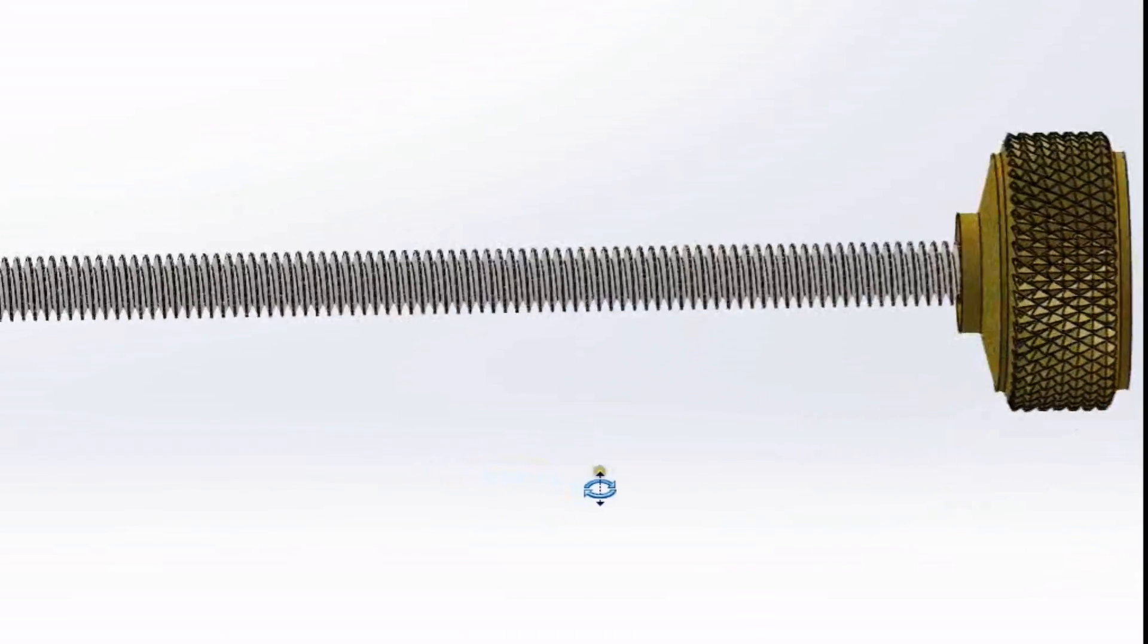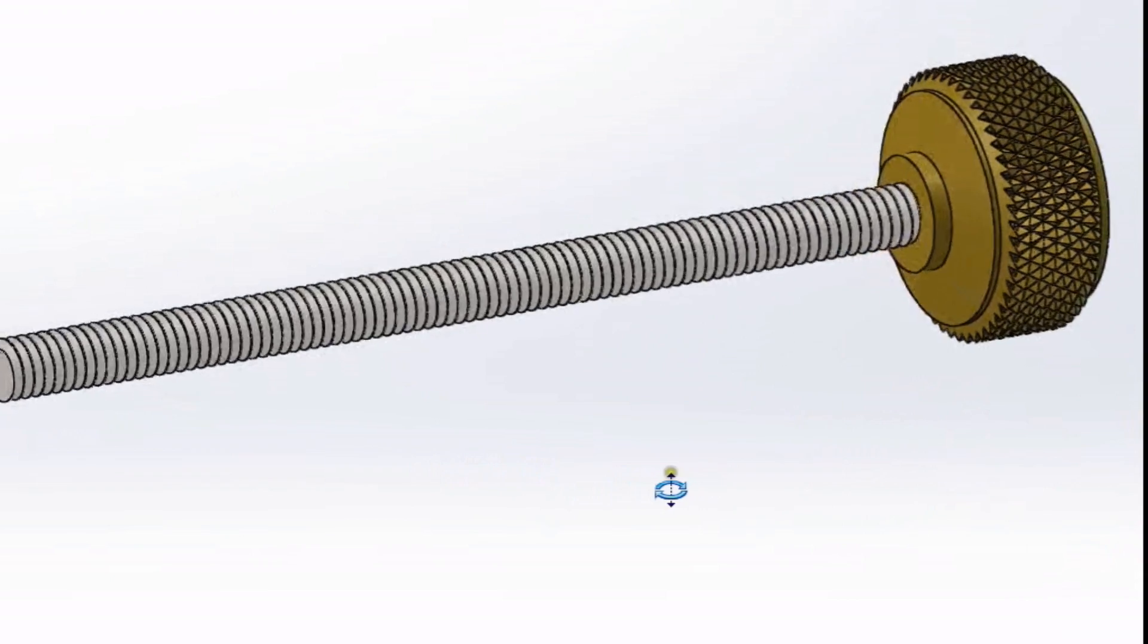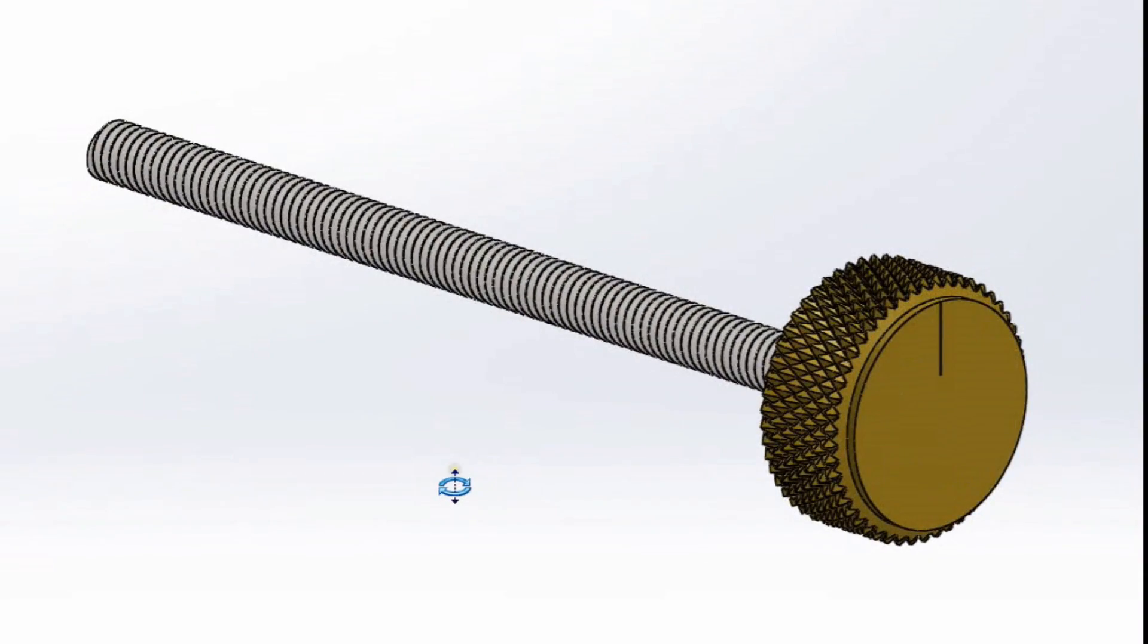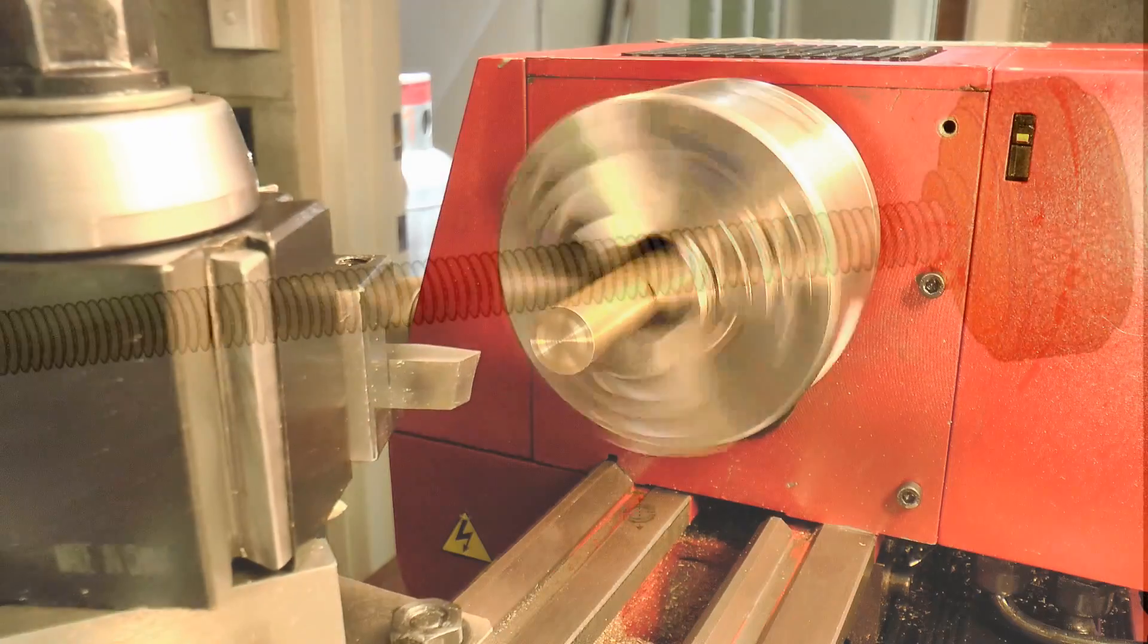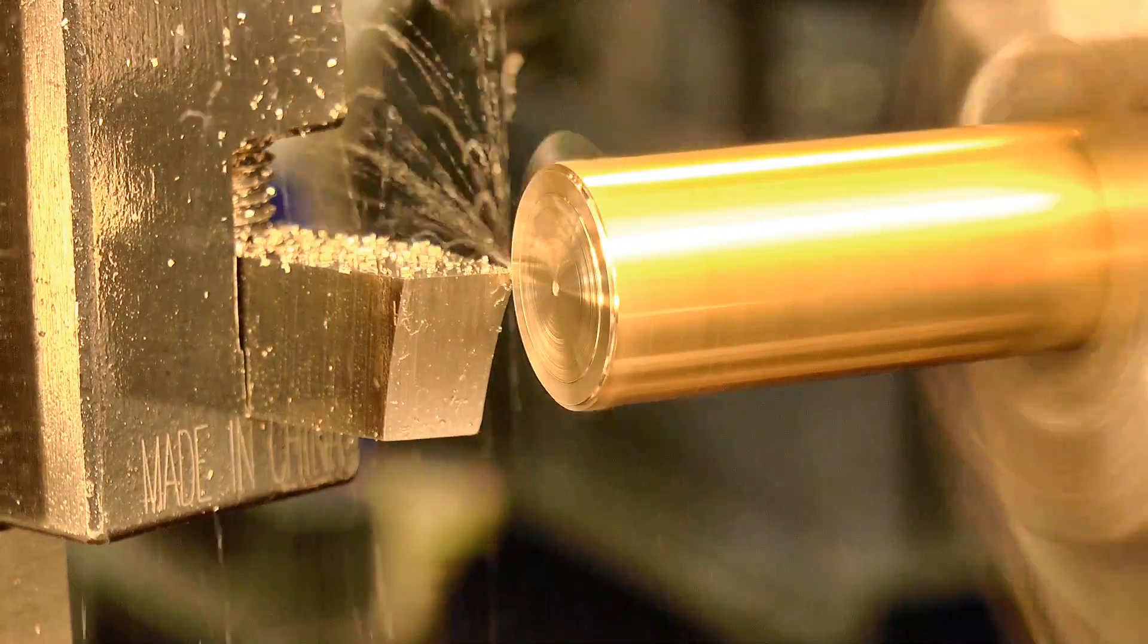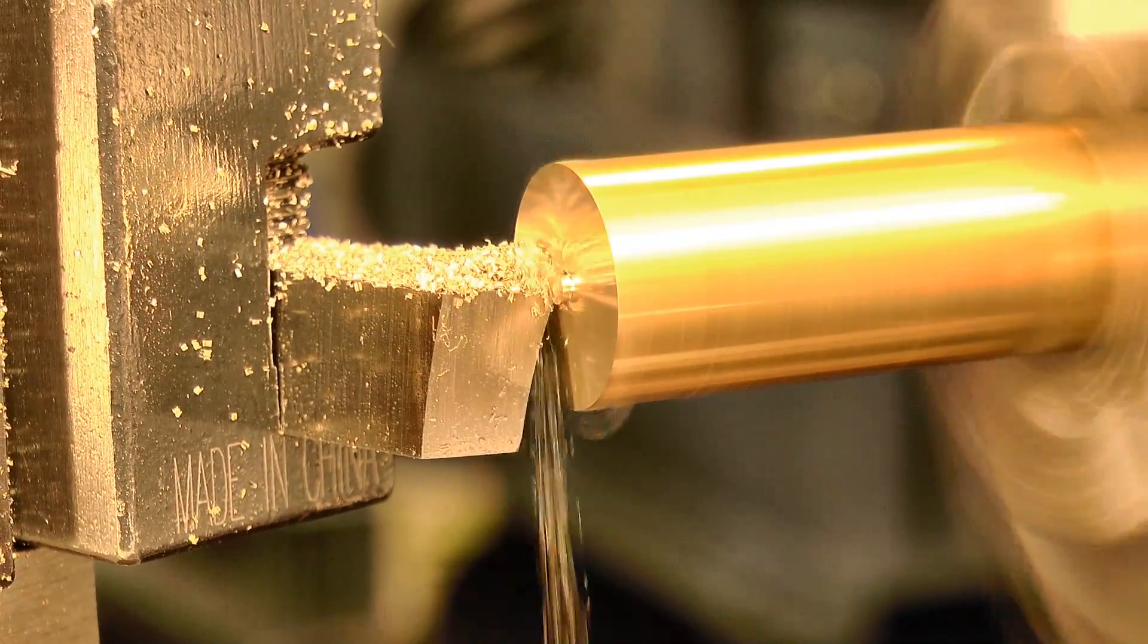Now for the adjusting screw. For the threaded portion, I'll make life a bit easier for myself by using some threaded rod. The thumb grip will be machined in a similar way to the previous part. First the stock is trimmed to the correct diameter for knurling.